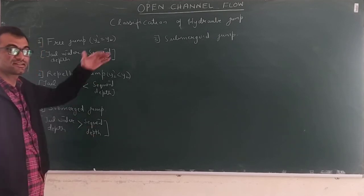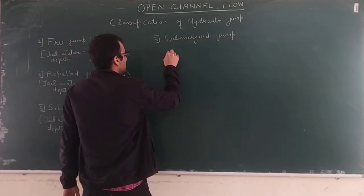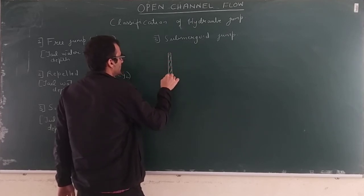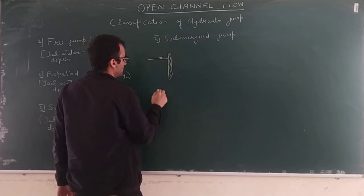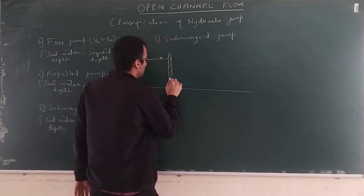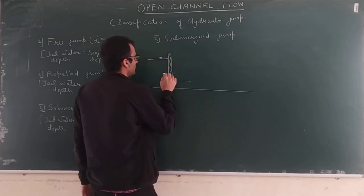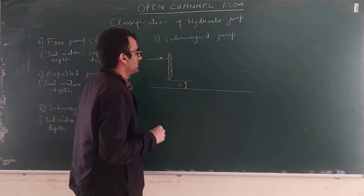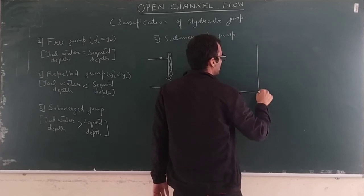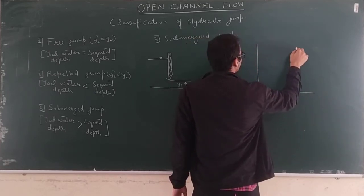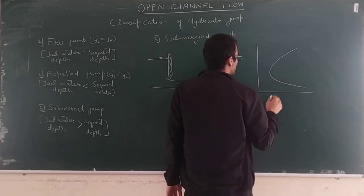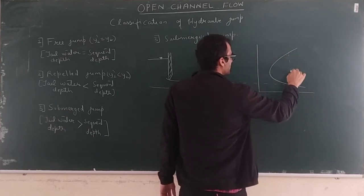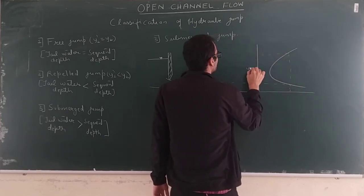The submerged jump occurs when the tail water depth is greater than the sequent depth. Suppose in a channel you have supercritical flow depth Y1 controlled by a sluice gate. Drawing the specific force diagram, for this particular Y1 the sequent depth comes as Y2.